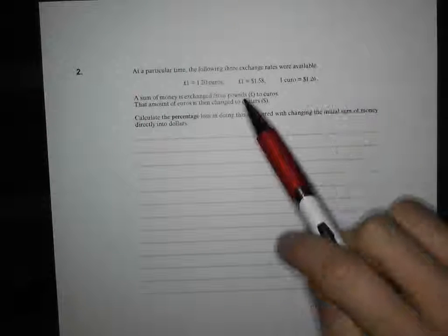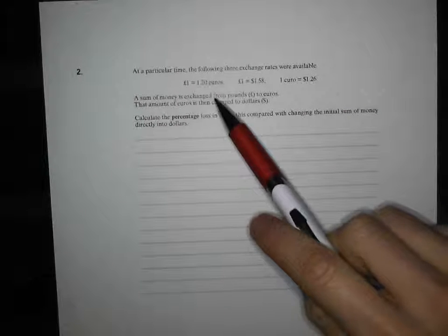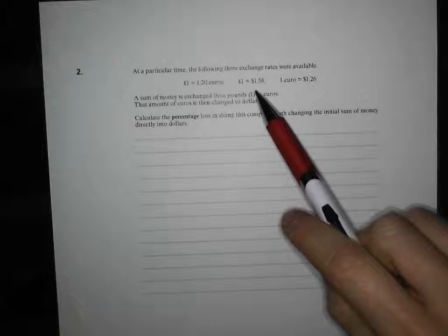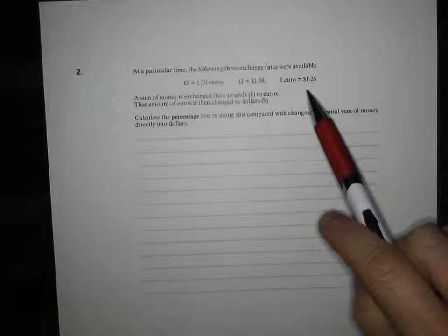At a particular time, the following three exchange rates were available: one pound equals 1.2 euros, one pound equals $1.58, and one euro equals $1.26.